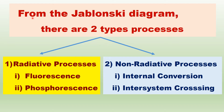From the Jablonsky Diagram, there are two major types of processes. There are two types of photo-physical processes: radiative processes and non-radiative processes.